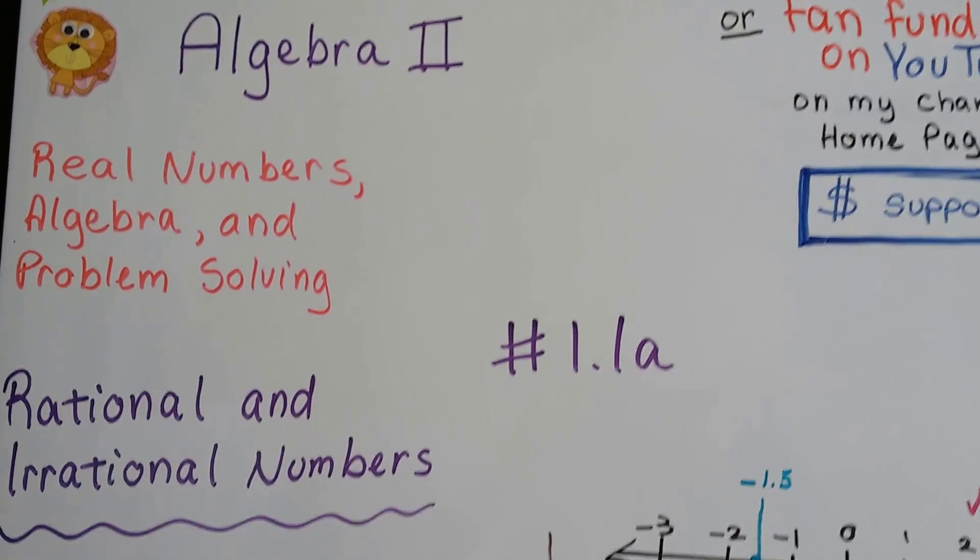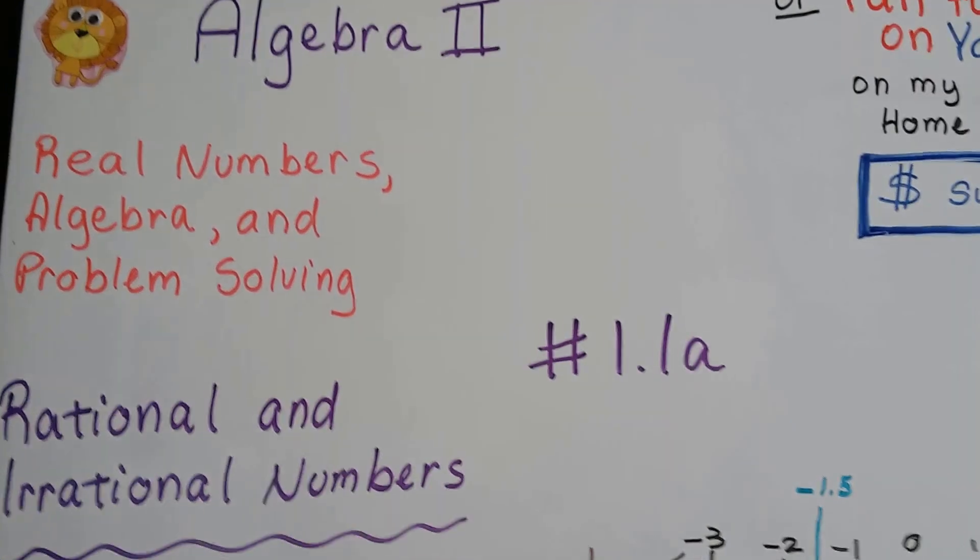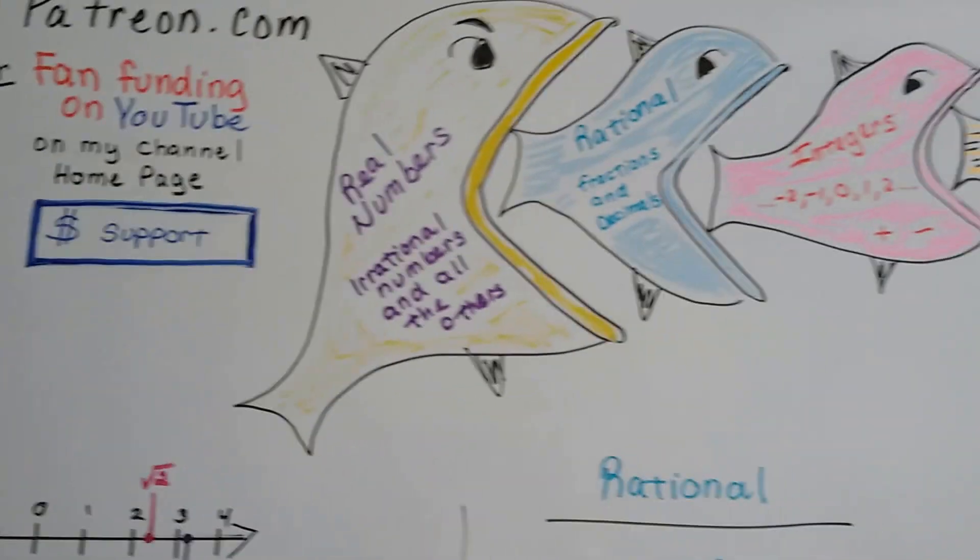Algebra 2, lesson 1.1a: Rational and Irrational Numbers. I'm going to take a look at my fish here.